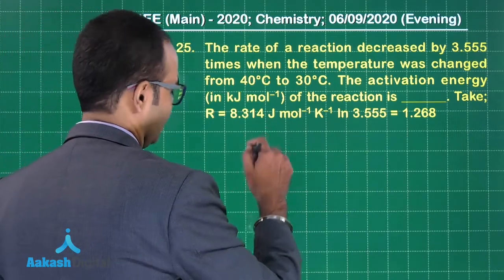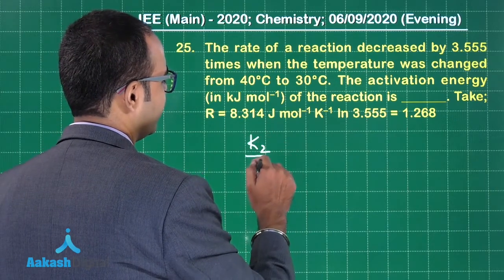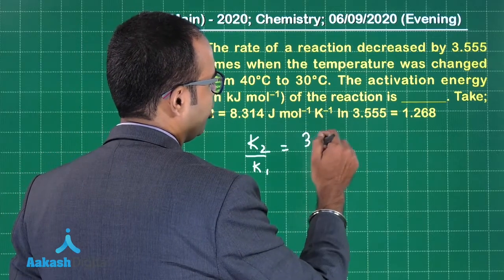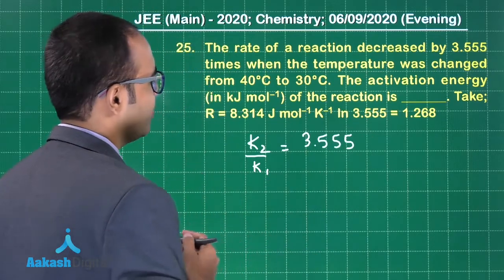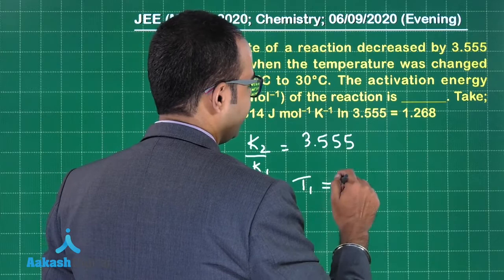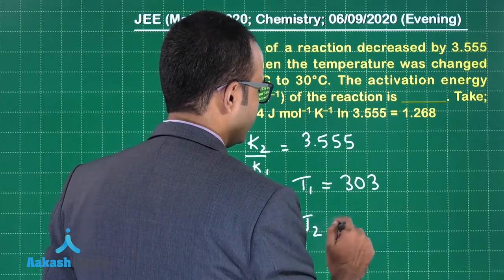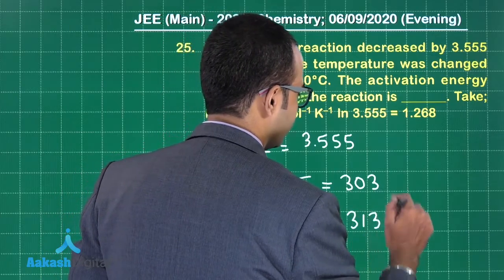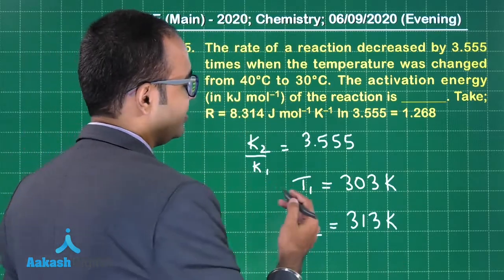What is given to us? K₂/K₁ = 3.555. Temperature T₁ is 303 K, temperature T₂ is 313 K. I have K₂/K₁, I have T₁, I have T₂.